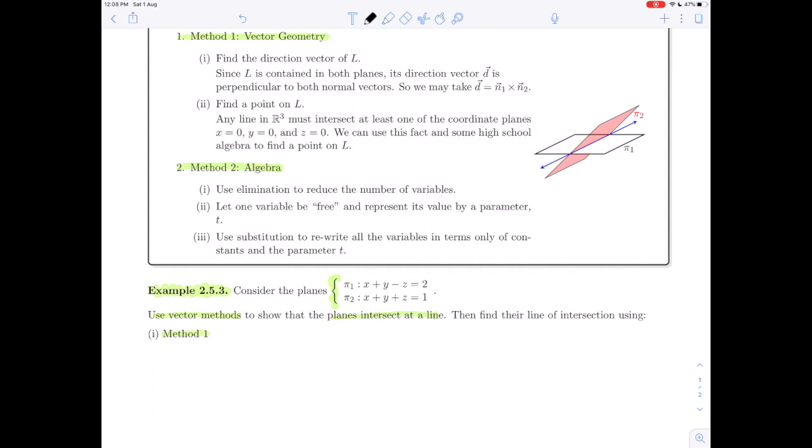The first thing we need to do is remember from our relative positions unit that two planes are intersecting at a line as long as their normal vectors are not parallel, which means their normal vectors are not multiples of each other. So we can read the normal vectors here. n1 from the first plane is (1, 1, -1), and n2 is (1, 1, 1).